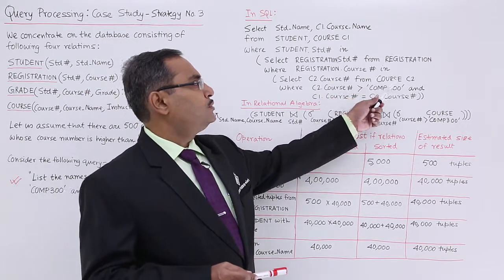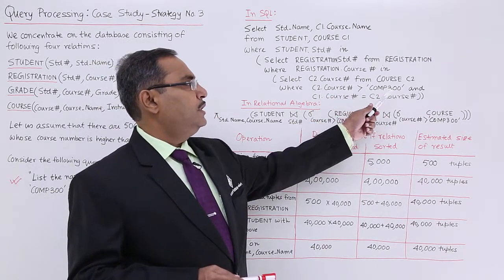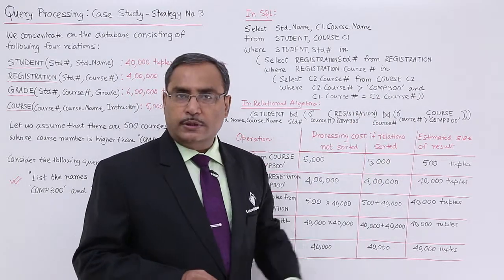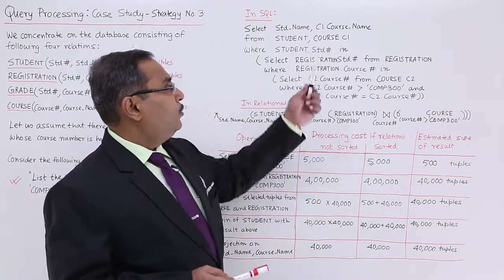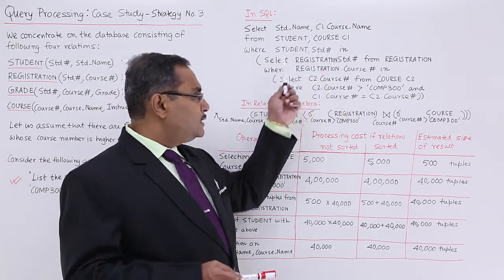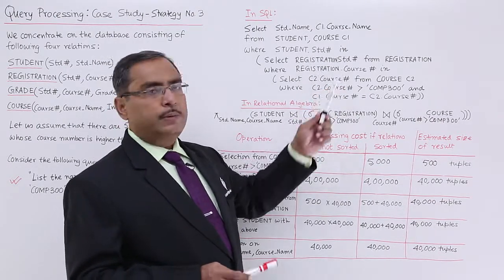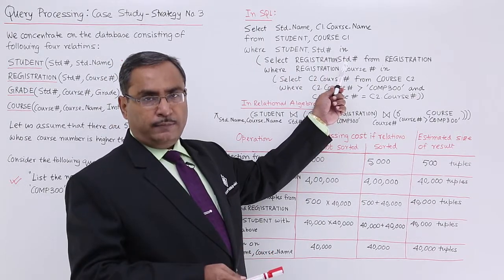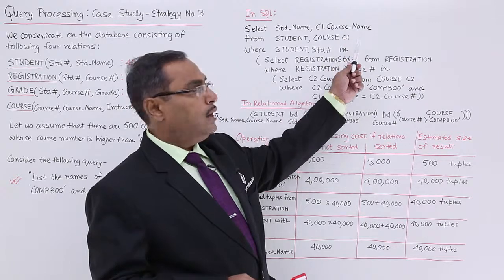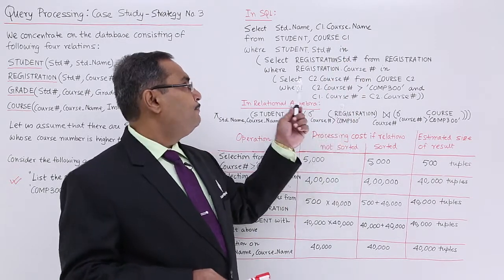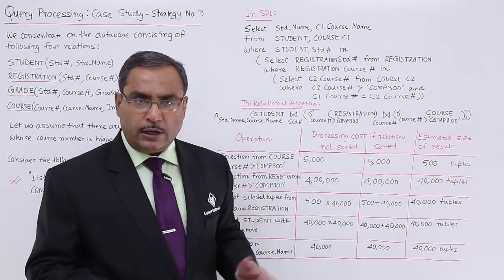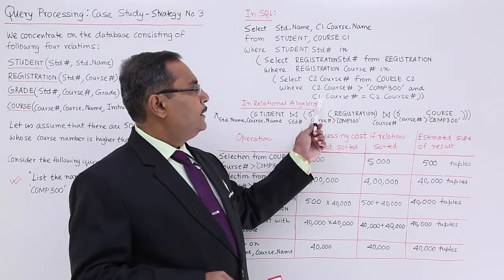Select c2 dot course number from course c2, where c2 dot course number is greater than COM300 and c1 dot course number is equal to c2 dot course number. Here we are having nested sub queries. This query uses 'IN' which means set membership — student dot student number must belong to the set where registration dot student number populates the student number list. If all this portion is true, the respective student name and c1 dot course name will appear in the output, where registration dot course number is in select c2 dot course number from course c2 where c2 dot course number is greater than COM300 and c1 dot course number equals c2 dot course number.